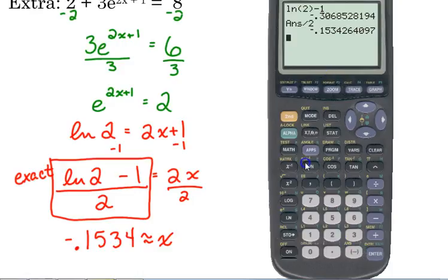And again, you can check it. Go back to the original. 2 plus 3, e, 2 times the answer plus 1, and that gives us 8.